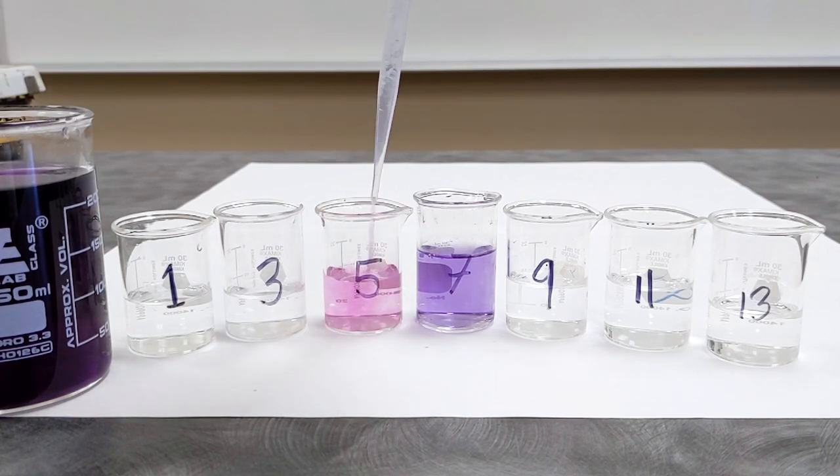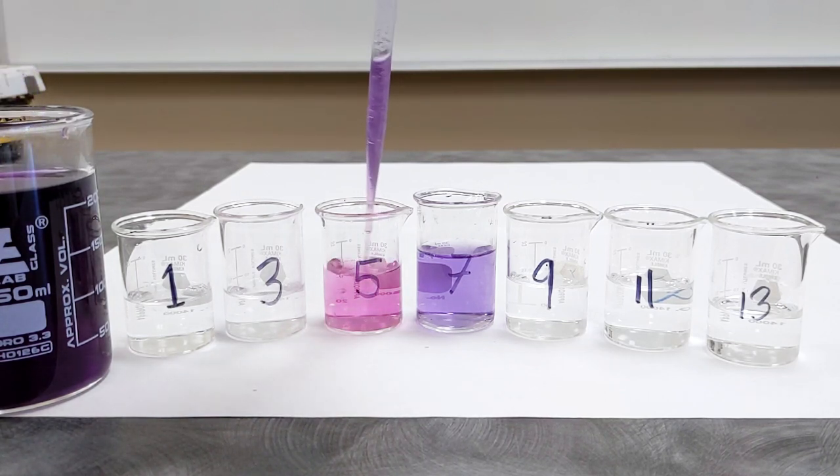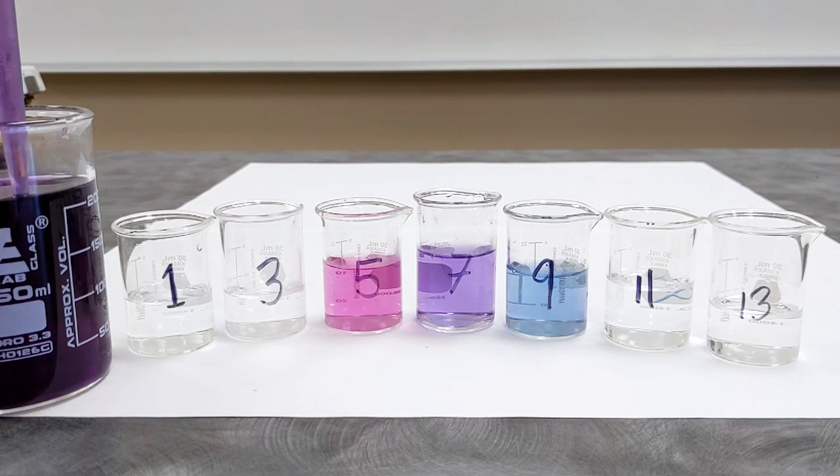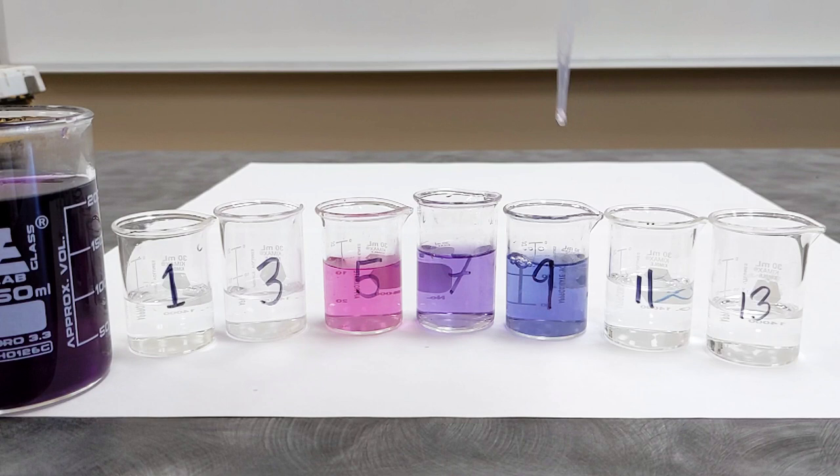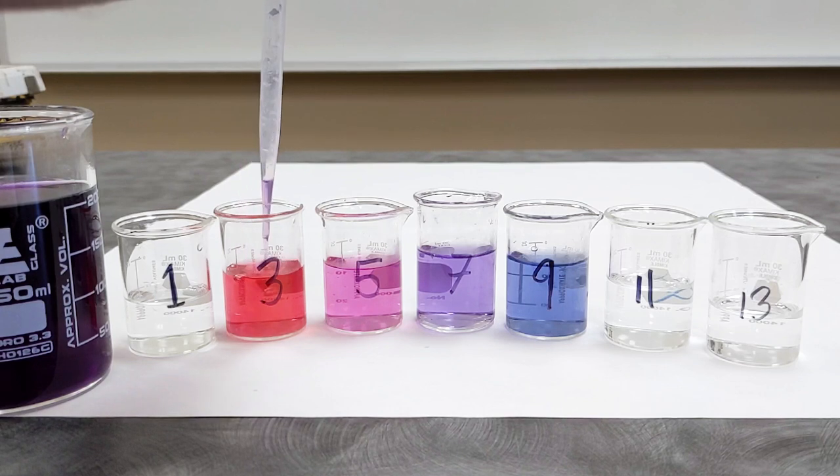Now what about the pH 5? Notice the cabbage juice turns more of a pink color. The anthocyanin must be absorbing more of the blue light and reflecting more of the red. At pH 9, the opposite. The anthocyanin is now absorbing more of the red and reflecting more of the blue light. And the result is much more blue. At pH 3, an even redder color. Not very much blue is being reflected here at all anymore.